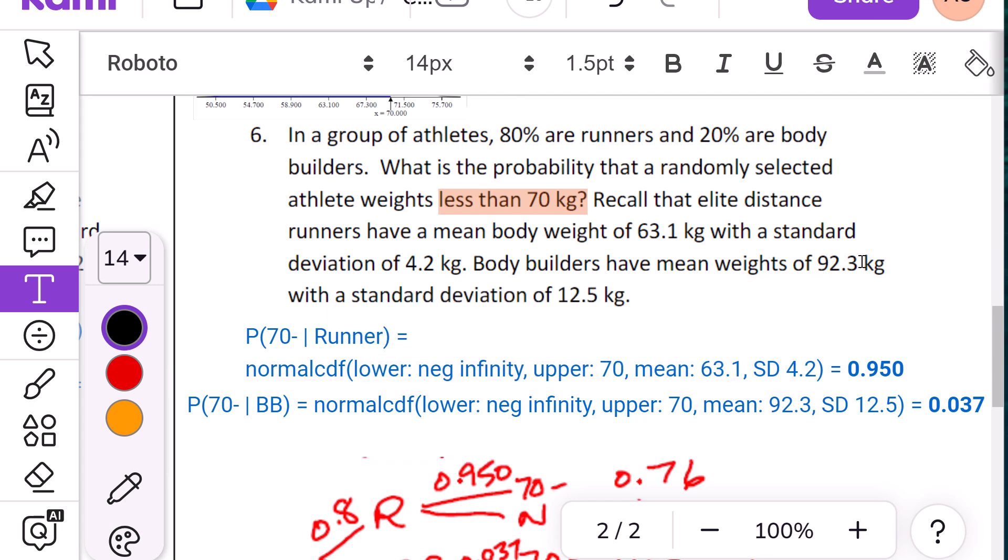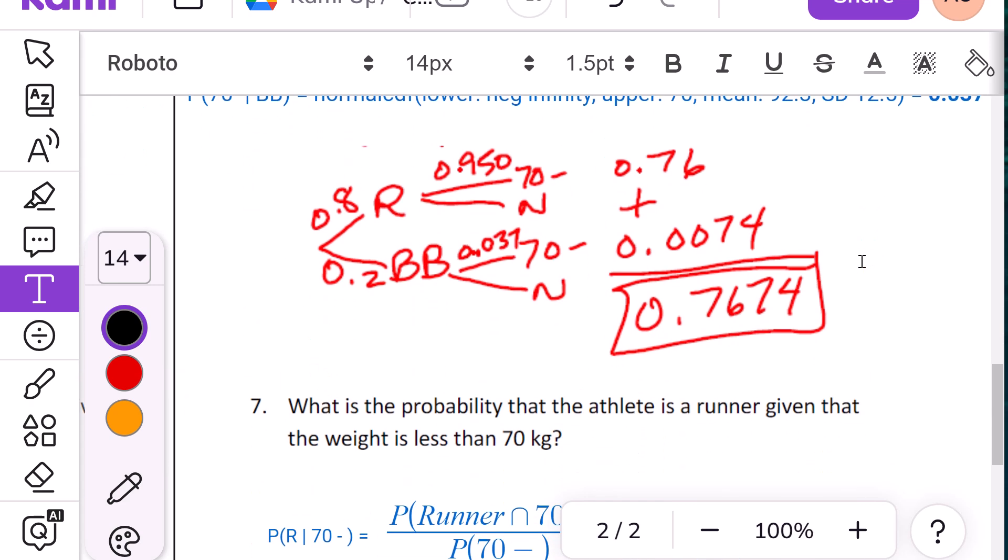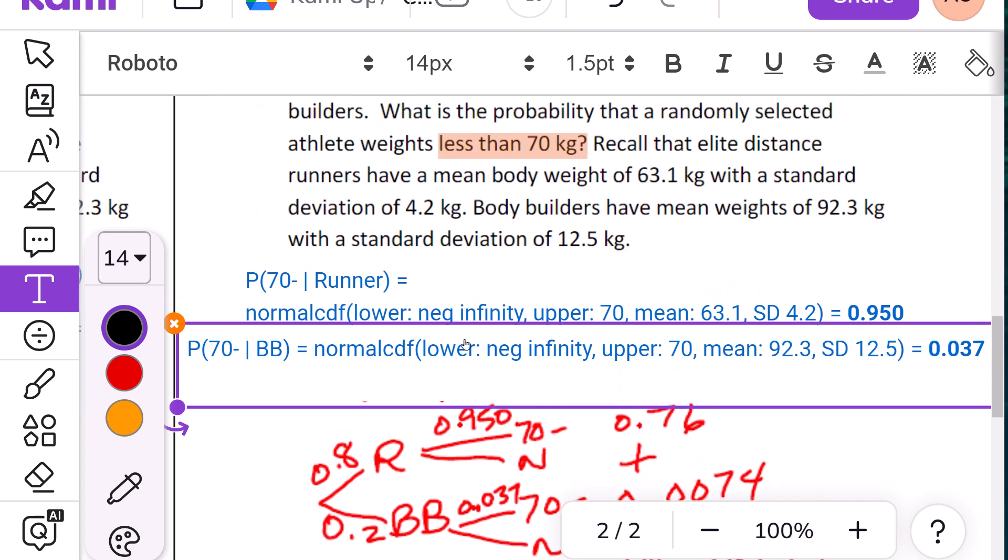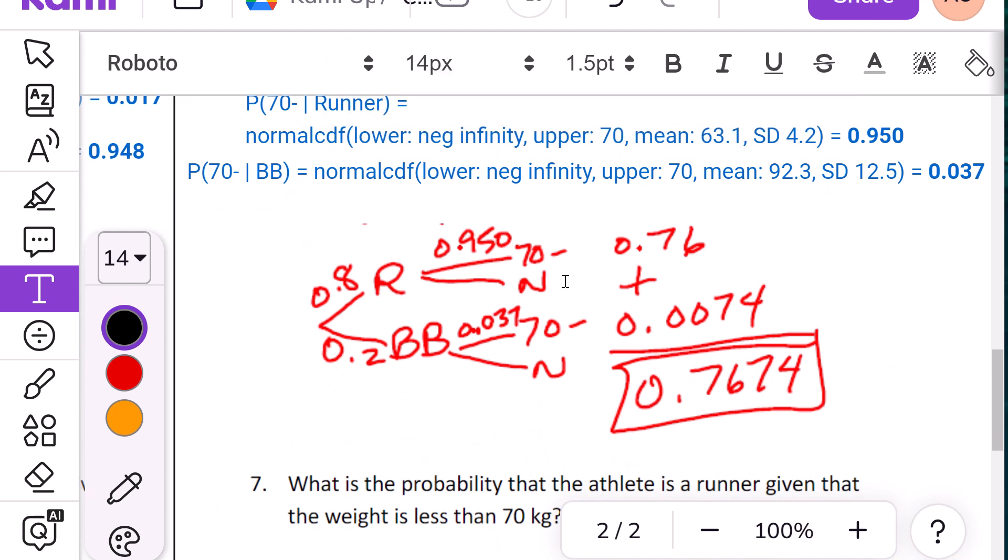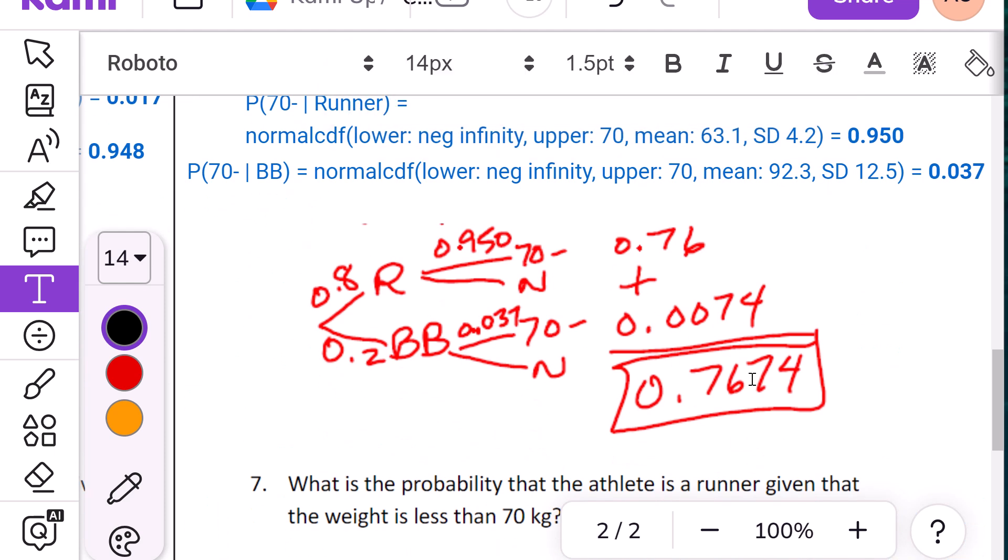So then it says, what is the probability someone in general weighs less than 70? Well, I have to take into account that 80% of my people are runners and 20% are bodybuilders. So I can calculate the probability that they weigh less. So we calculated 76.74% of my athletes weigh less than 70 pounds.